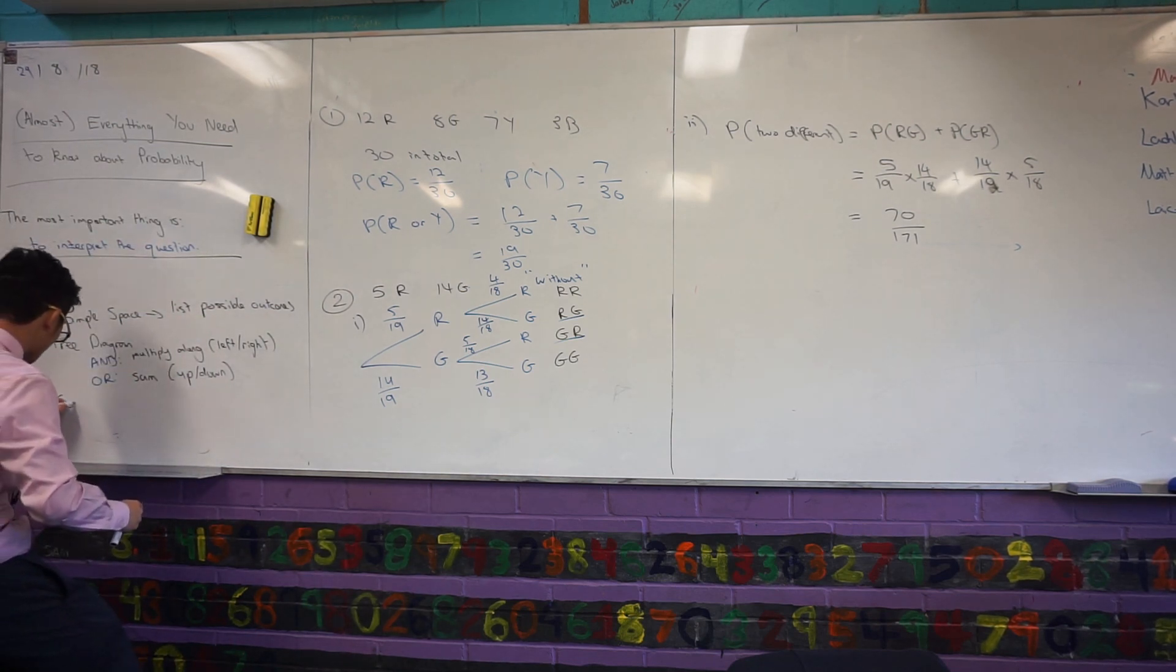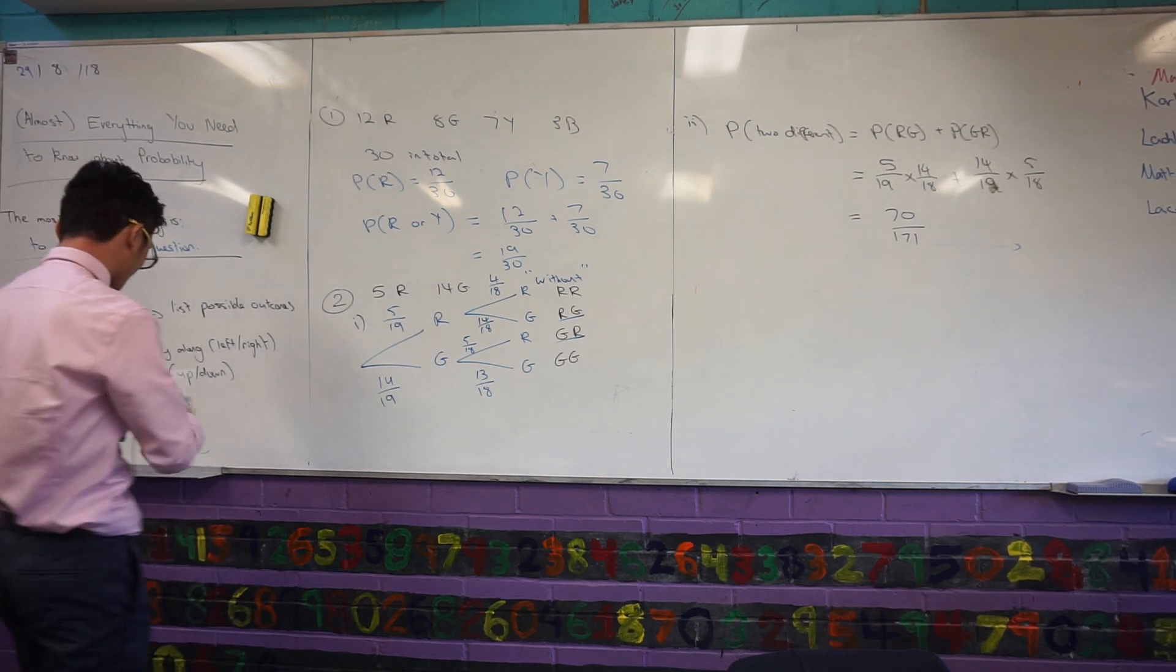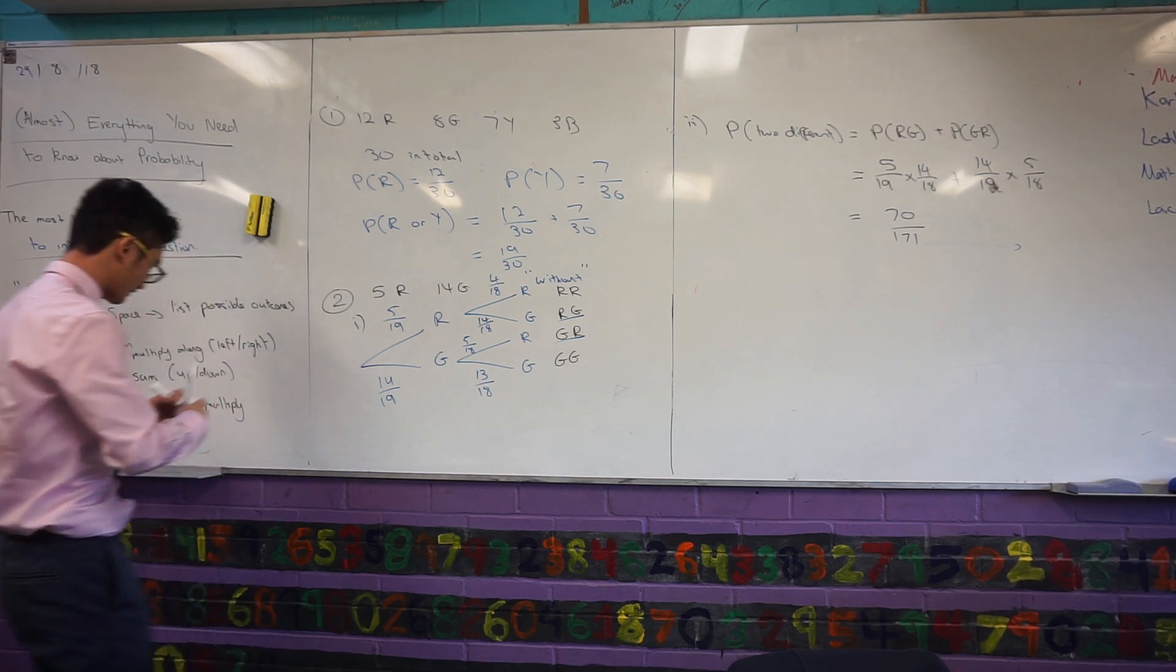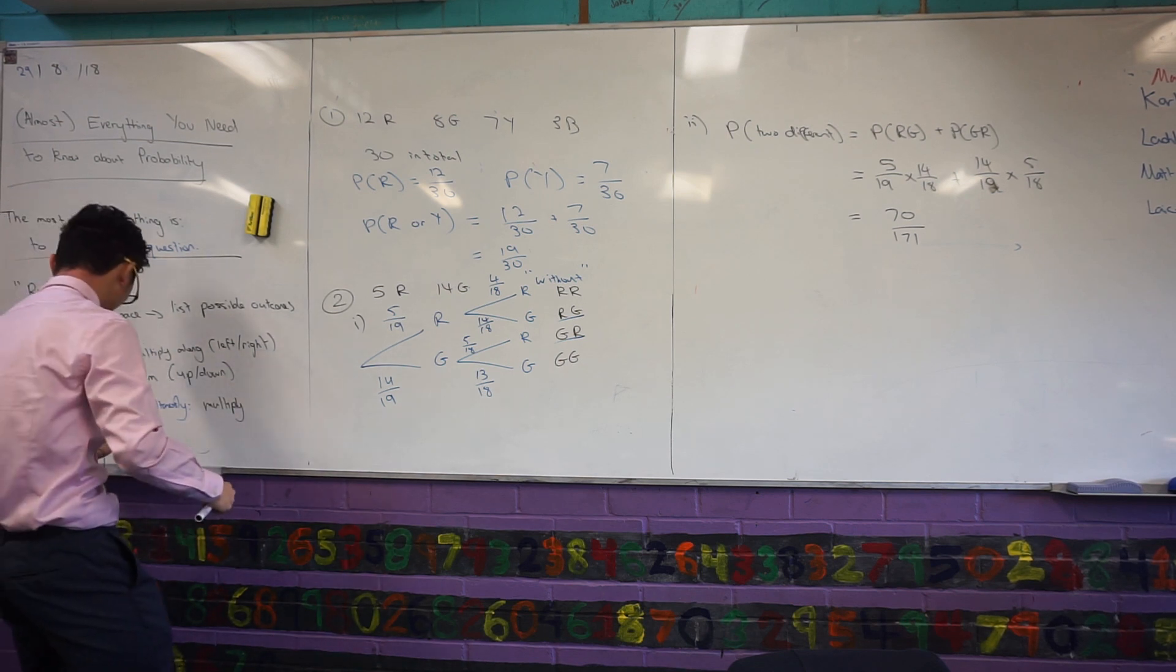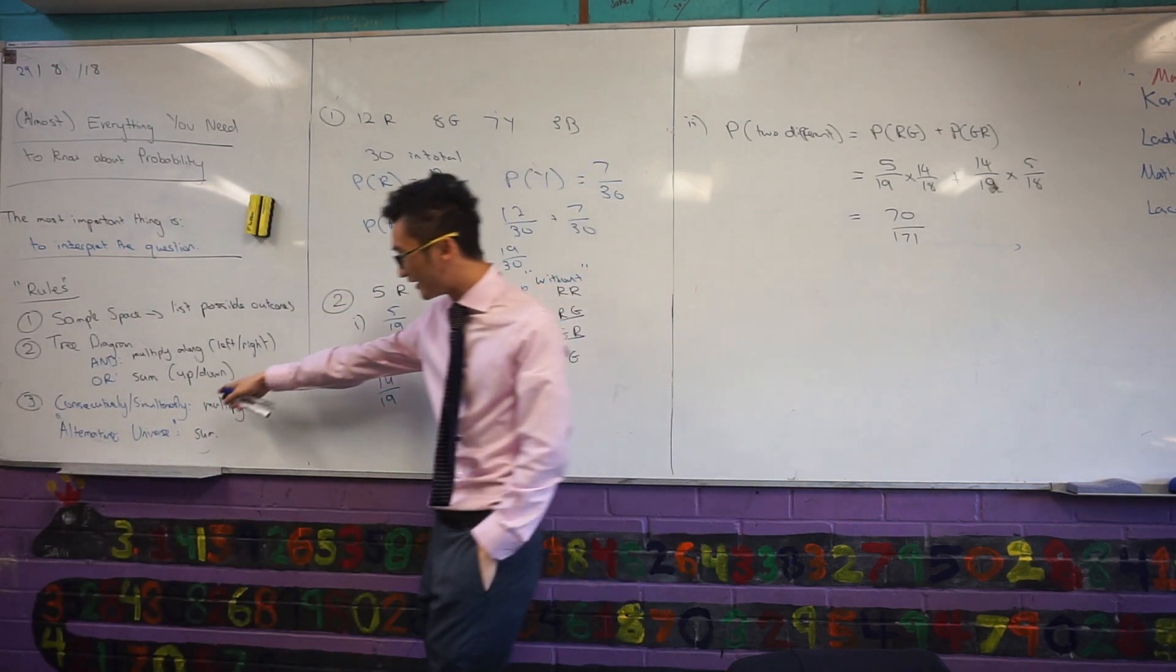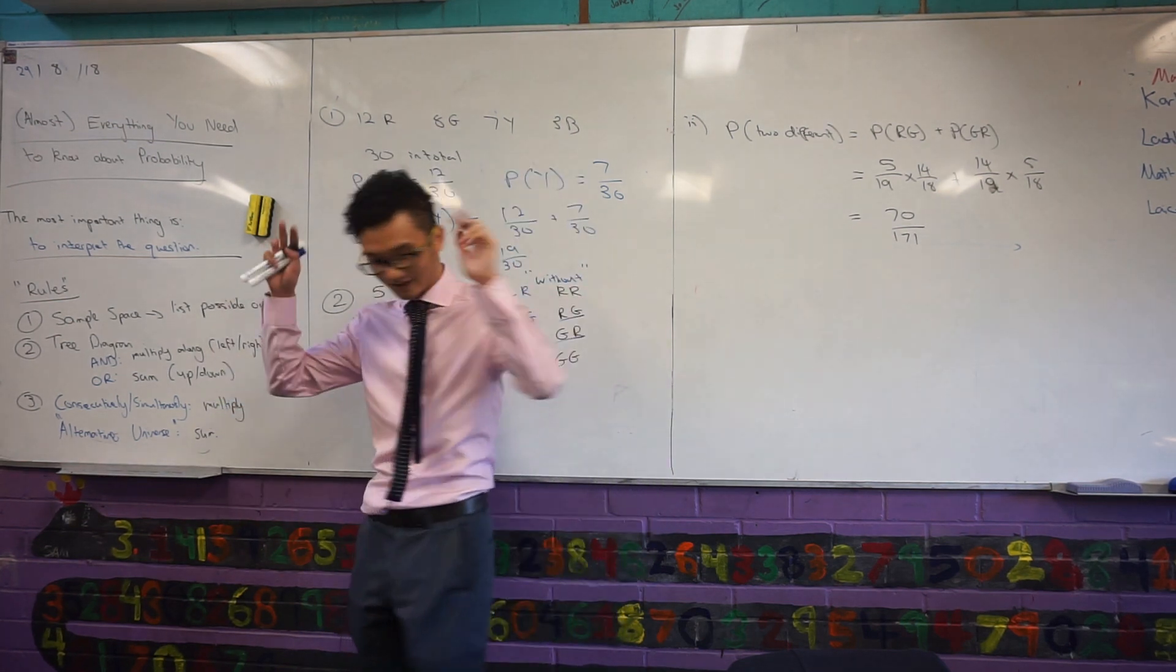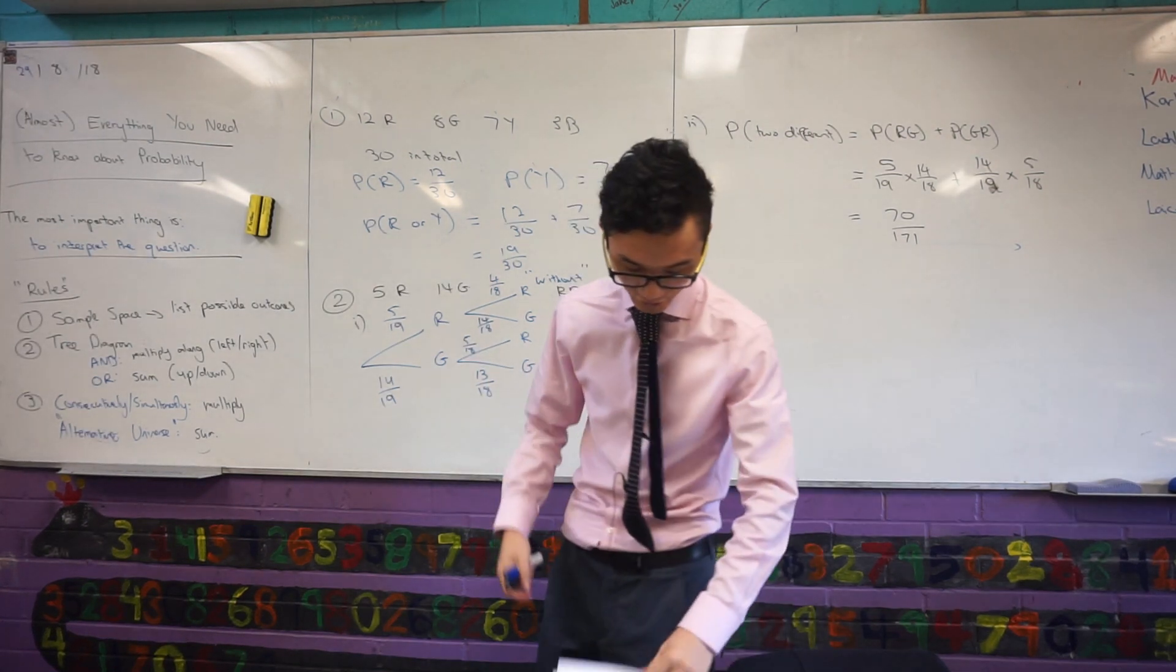So, if the event could happen consecutively and simultaneously, we are going to multiply. If things can happen, and this is my terminology here, it's definitely not an official one, but if it could be like an alternate universe, then I'll sum. So, let me recap that. If the event can happen consecutively or simultaneously, I will multiply. If it's an alternate universe, I'm going to sum them. I'm going to add them. How does this work? We'll look at the next question.